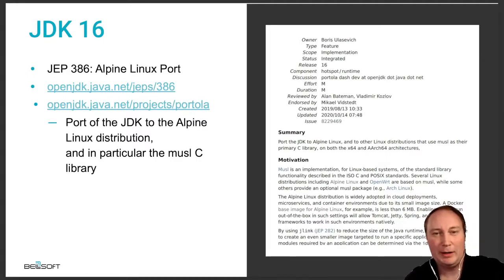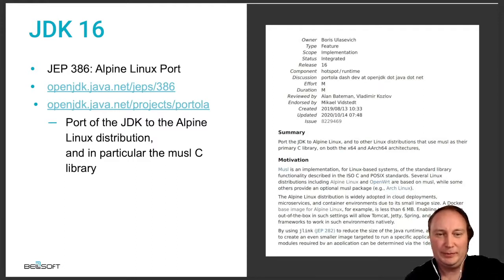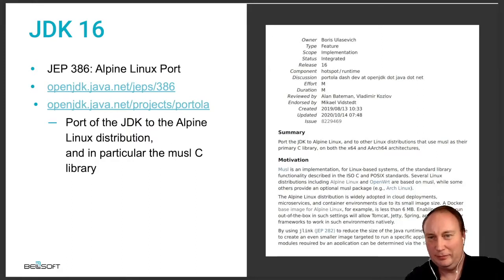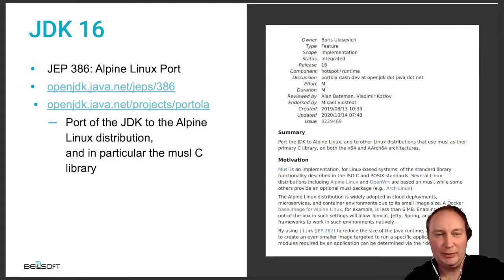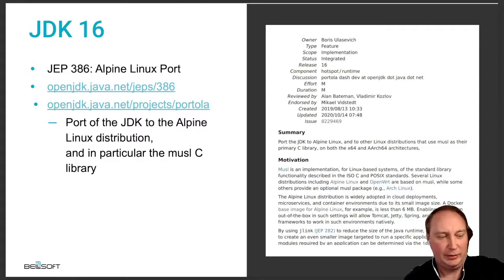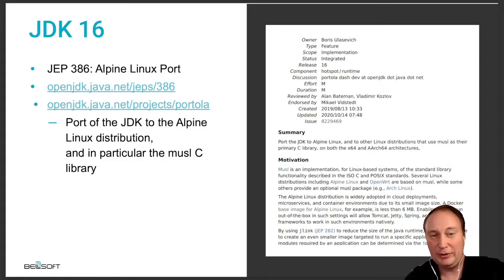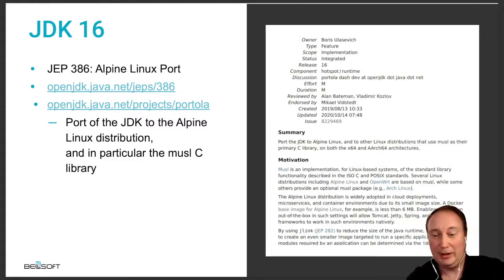We release and support our own binary distribution of OpenJDK called Liberica JDK. As you may know from my previous FOSDEM talk, during the lifetime of JDK 16, JEP 386 was integrated into OpenJDK, bringing Alpine Linux and musl C library support to the OpenJDK mainline.